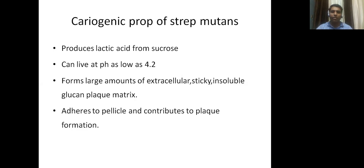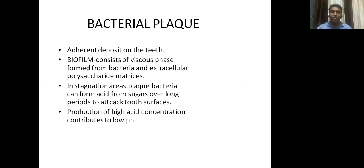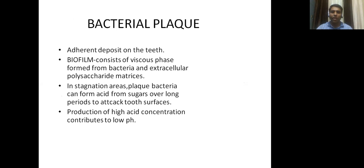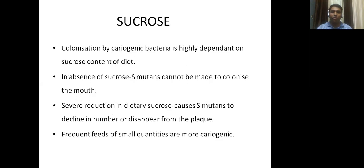The bacteria adhere to pellicle and contribute to plaque formation. Bacterial plaque is an adherent deposit on the teeth — a biofilm consisting of a viscous phase formed from bacteria and extracellular polysaccharide matrices. In stagnation areas, plaque bacteria can form acid from sugars over long periods to attack tooth surfaces, and production of high acid concentration contributes to low pH of the oral cavity.